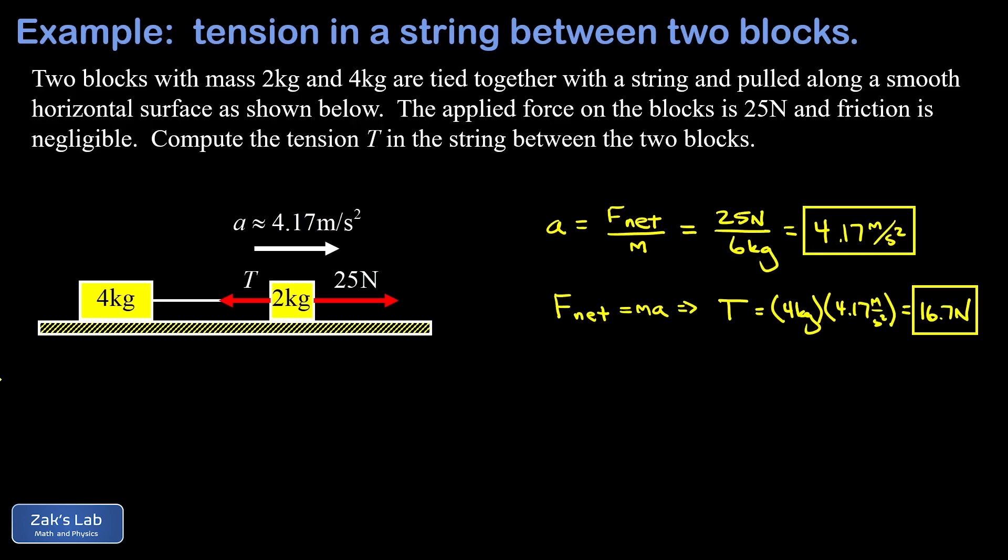We already figured out that's 4.17 meters per second squared. And now we're just going to solve for the tension again and make sure that it agrees with the first answer. So applying Newton's second law to the 2 kilogram block, again, we write F net equals ma.